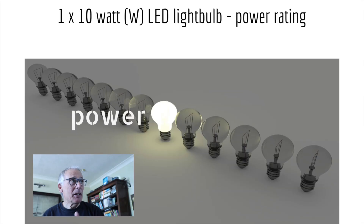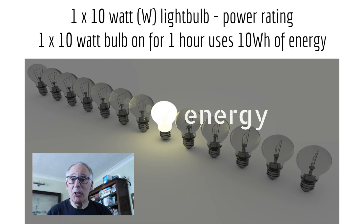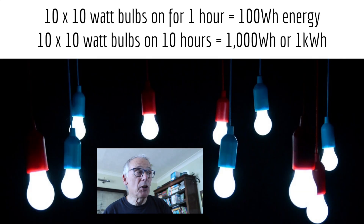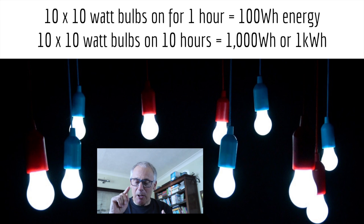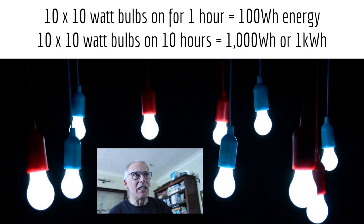Just to recap: one bulb with a power rating of 10 watts, left on for one hour, gives 10 watt-hours of electrical energy consumed. Ten 10-watt bulbs on for one hour gives 100 watt-hours. And 10 bulbs of 10 watts on for 10 hours is 1,000 watt-hours, or one kilowatt-hour.